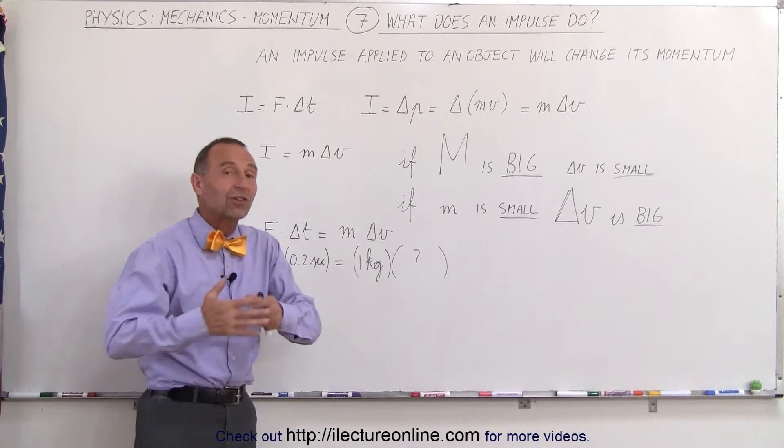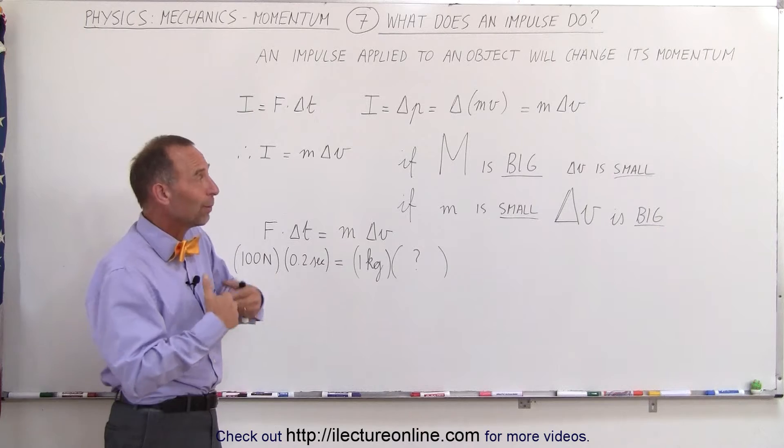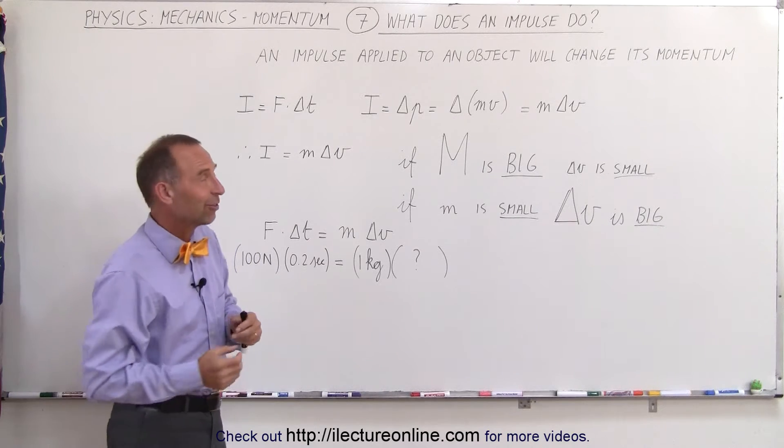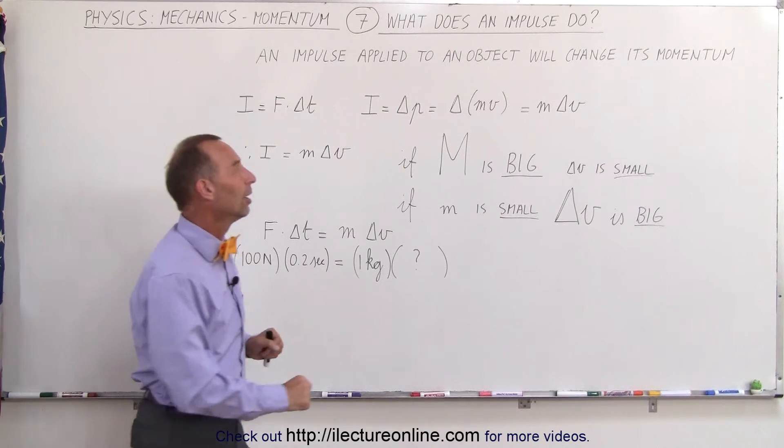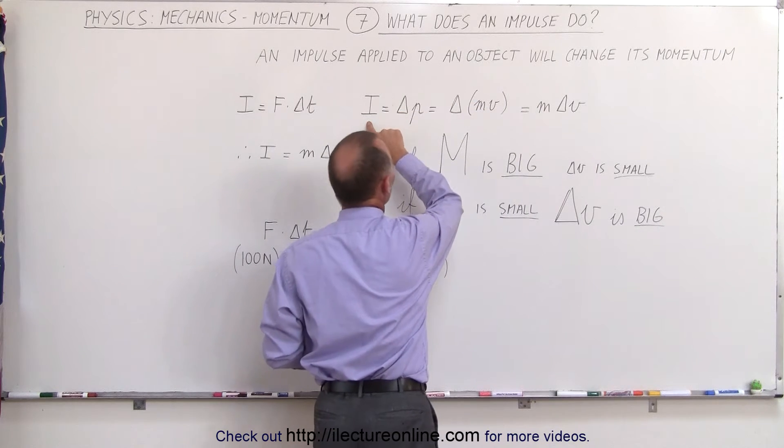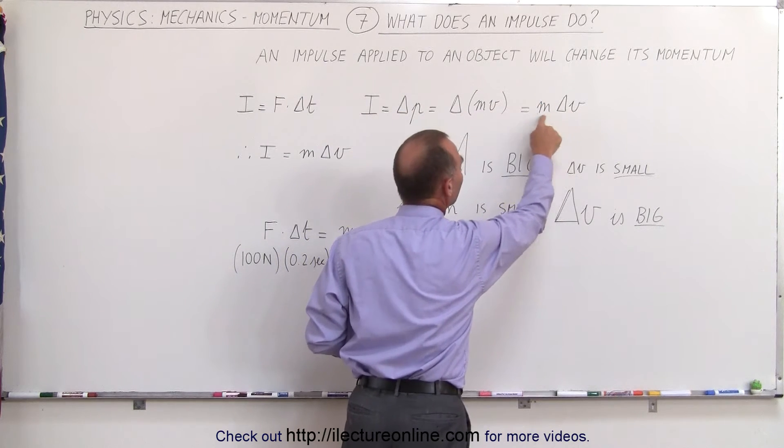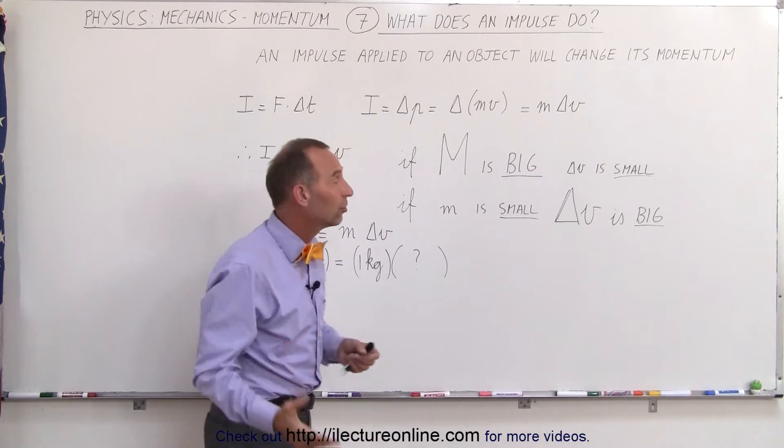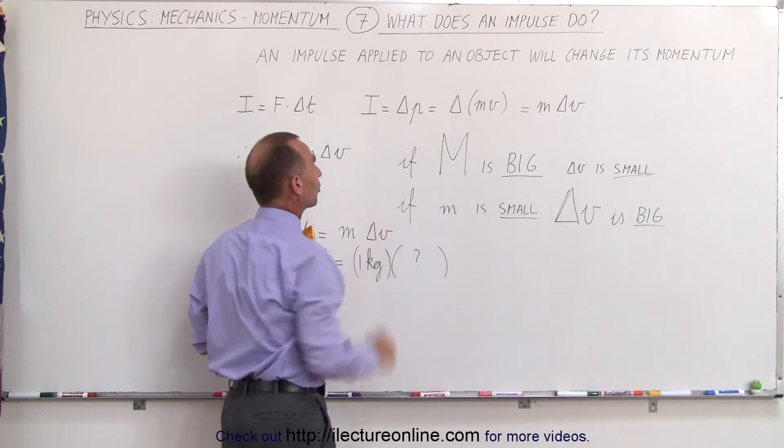Now most objects will not change mass when you hit them. They will maintain the mass unless a little piece flies off, but let's assume that doesn't happen. The mass will stay constant, so therefore an impulse will only cause a change in the velocity, not in the mass, and that's because an impulse changes the object's momentum.